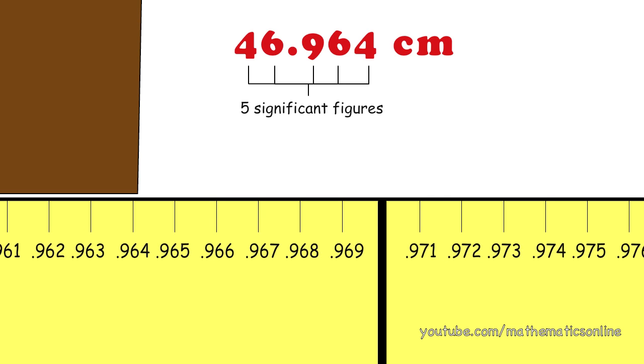We can continue increasing the precision of our measuring tool to get a more accurate measurement, but eventually we have to stop at some point, or else we will keep on going forever. Therefore, we use significant figures to tell us the point of accuracy at which we stop taking a measurement.